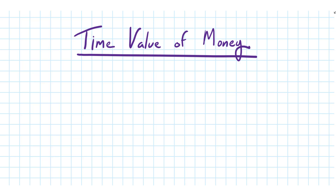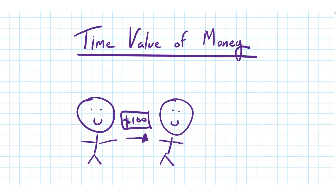Welcome. In this video let's explore the concept of the time value of money. Let's first look at what it's all about and then we'll learn how to quantify it. Imagine you loan $100 to your best friend. All things being equal, you would prefer to receive your $100 back sooner rather than later — you'd rather be paid back in one week rather than one year. That's the idea of the time value of money: that all things being equal, we prefer to receive our cash flows sooner rather than later.